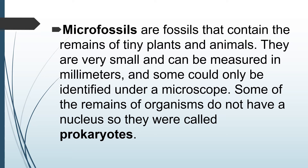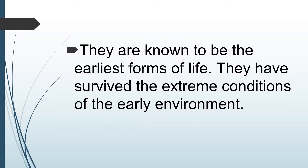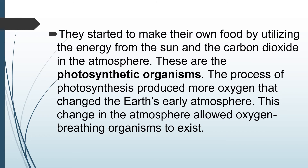Some of the remains of organisms do not have a nucleus, so they were called prokaryotes. They are known to be the earliest forms of life. They have survived the extreme conditions of the early environment. They started to make their own food by utilizing the energy from the sun and the carbon dioxide in the atmosphere. These are the photosynthetic organisms. The process of photosynthesis produced more oxygen that changed the Earth's early atmosphere.